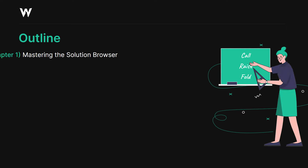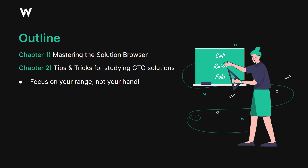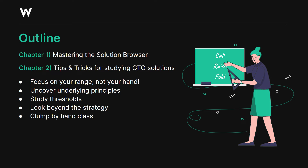The first half of this video will focus on mastering the features in GTO Wizard's solution browser — there are a lot of really cool and niche features that I don't think many people are utilizing that they really should be. The second half will teach you some tips and tricks for studying GTO solutions more effectively, including focusing on your range rather than your hand, uncovering underlying principles, studying thresholds, looking beyond the strategy, clumping by hand class, analyzing your opponent's counters, and comparing the ranges.